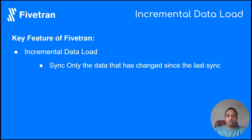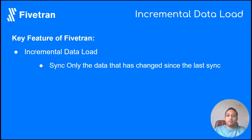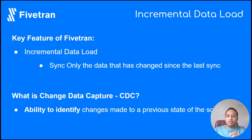Incremental data load allows syncing only the data that has changed since the last sync. We're talking about a scenario where the initial sync between your source and destination is completed, and the day-to-day updates to the source database should also get updated on your final destination database. To make this incremental data load work, we need to capture the changed data — that is called Changed Data Capture, or CDC. CDC is the ability to identify the changes that were made on the source from its previous state.